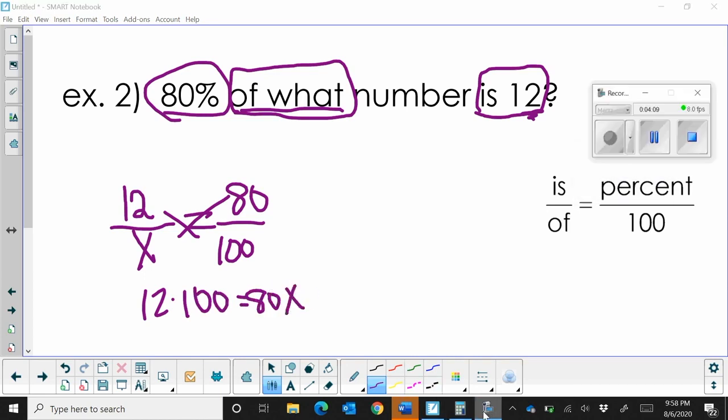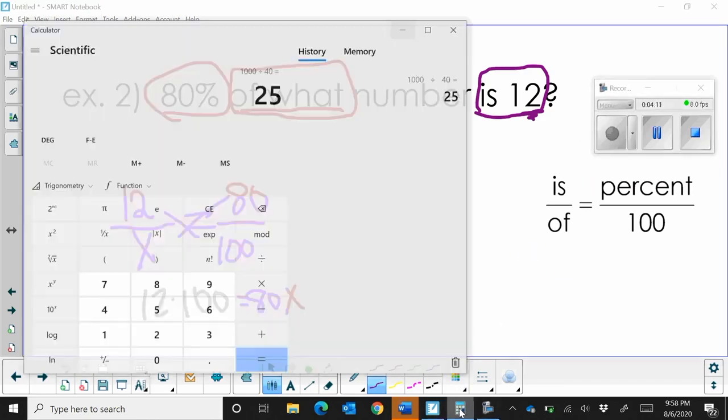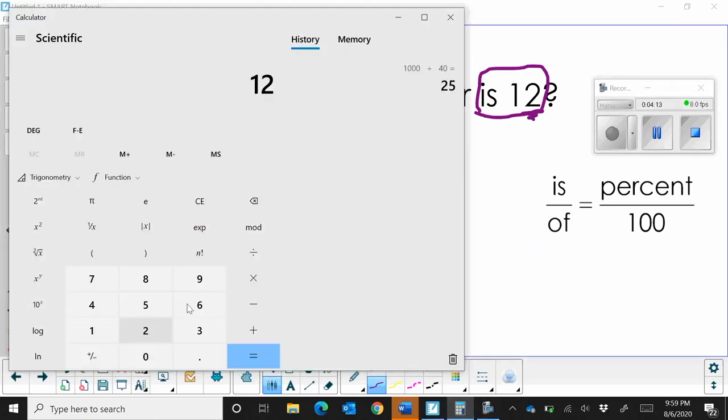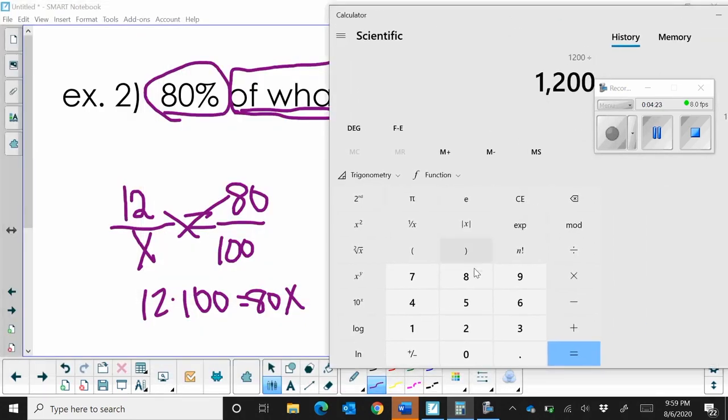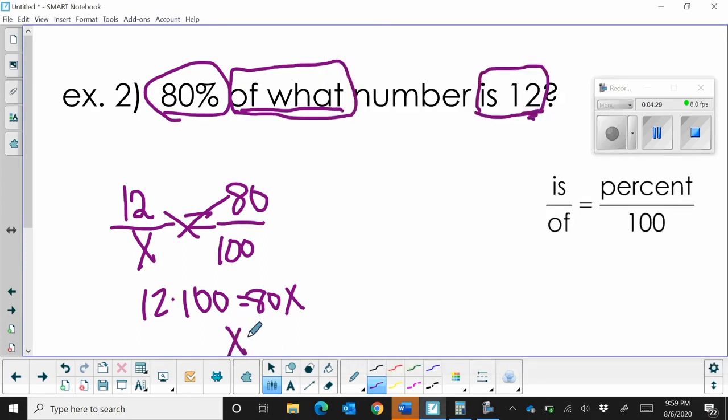So again, grab your calculator. 12 times 100 is equal to 1200 divided by 80. And we get 15. So x is 15.